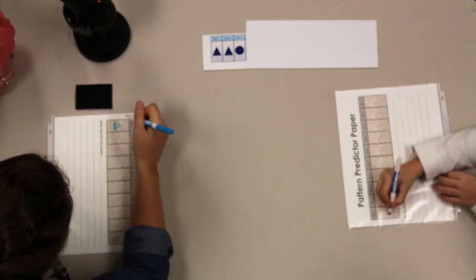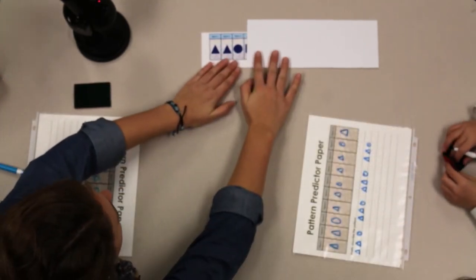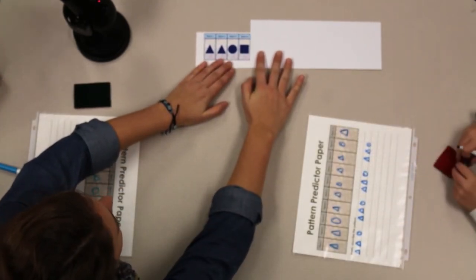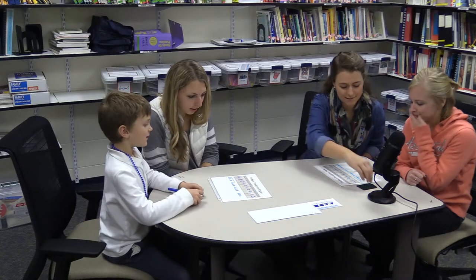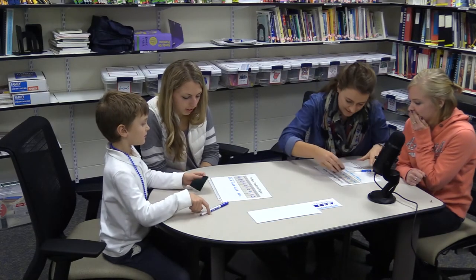Once all pairs have their prediction, reveal the fourth figure. If pairs accurately predict the fourth figure and are confident in their pattern, they may choose to submit by flipping their pattern upside down next to the pattern sleeve.